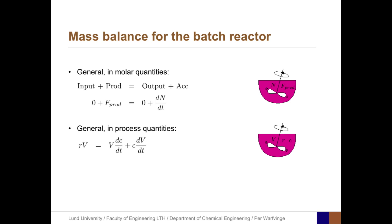If we express this equation in process quantities, we get on the left side R times V equals, and on the right side we have split the molar rate of change into two parts: V dC/dt and C dV/dt. If the volume is constant, the last term C dV/dt equals zero, and we can eliminate V from both sides to get the final equation R equals dC/dt.